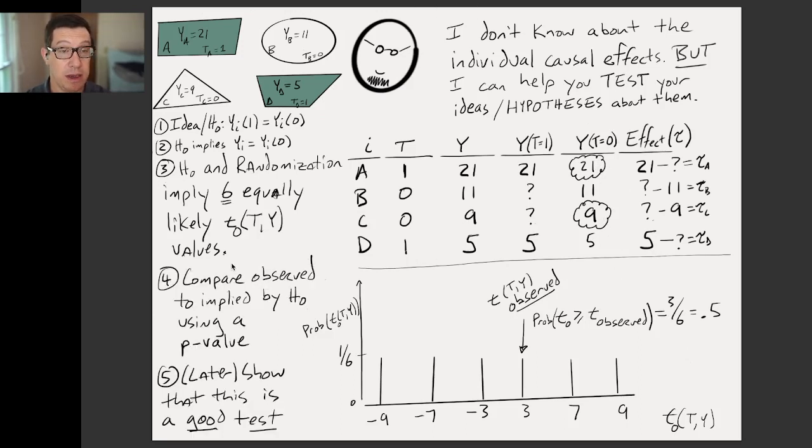So the procedure is we compare the observed to the implied, what we implied. Compare the observed test statistic number three in this case to the implied test statistic, the implied by the null hypothesis using a P value. And then later on the farmer might say, is this a good test? And Fisher can say, yes, this is a good test. You will not mislead yourself with this test. If you use this test a lot. So there we go. You can see that there are two different ways that are common ways to learn the effects of the causal effects of experiments. One comes from Fisher and involves P values. And one comes from Neyman and involves estimation. And that's why we use statistics to learn about causal effects in experiments.